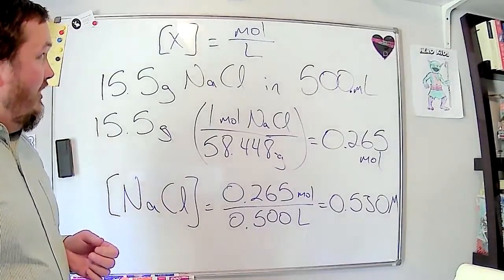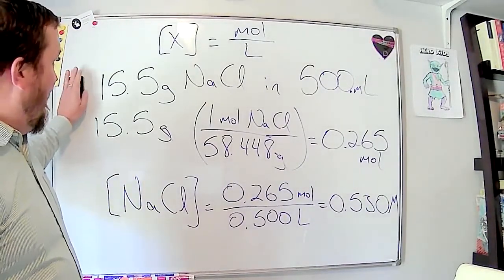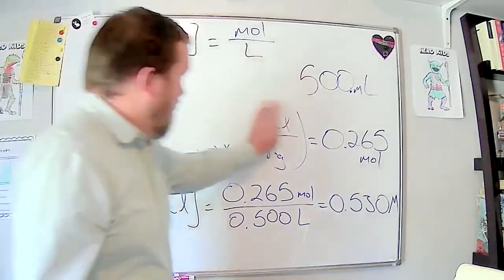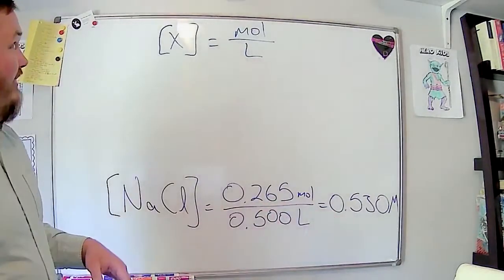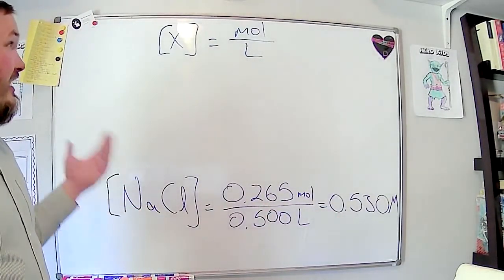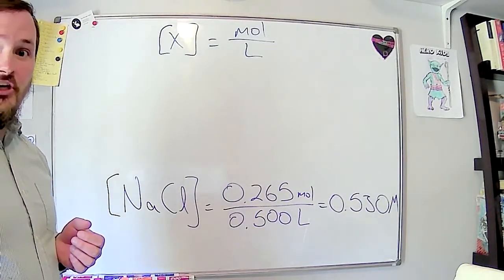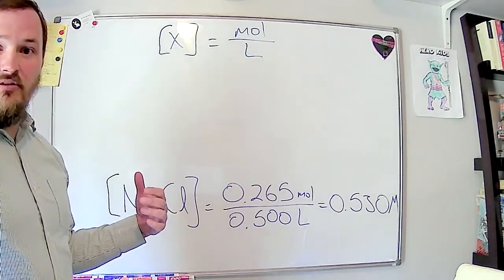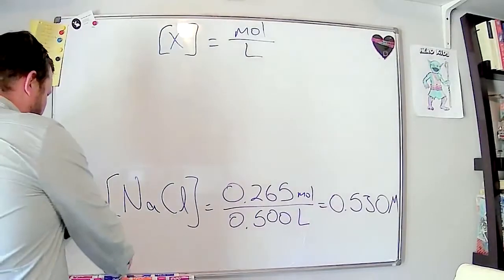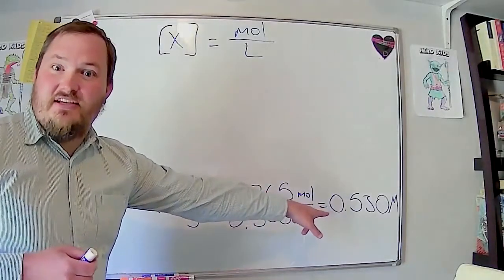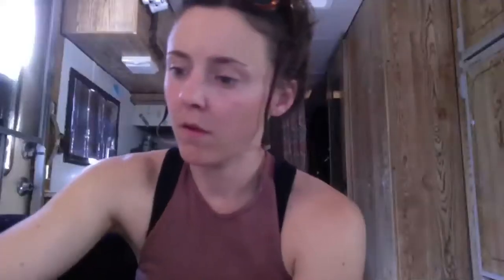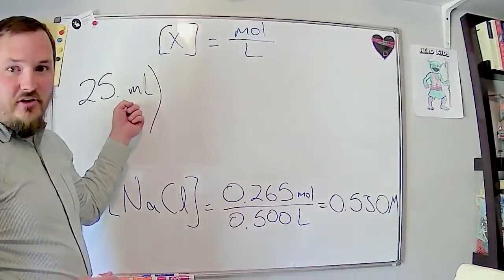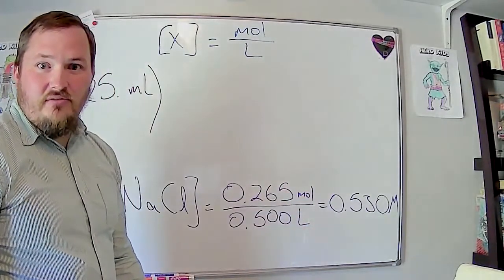Let's do one more example using the same solution. If I had 25 milliliters of this solution, how many moles of sodium chloride would I have? We'd reverse what we just did — we can use the concentration as a conversion, because it's a combined unit like density. Convert 25 milliliters to liters first: 25 milliliters times (1 liter / 1000 milliliters) = 0.025 liters.